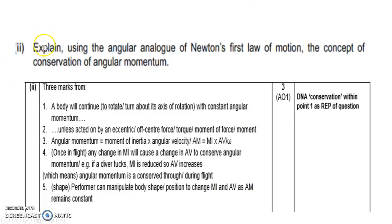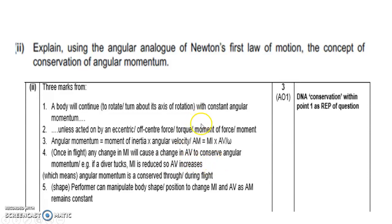This is an exam question that came up and it's quite useful to see it: explain using the angular analogue of Newton's first law of motion the concept of the conservation of angular momentum. You've got two marks for defining the angular analogue, another mark for saying what angular momentum is as the product of moment of inertia and angular velocity, and then a nice easy point to say that a change in moment of inertia will cause a change in angular velocity to conserve momentum. That to me is really important and I'd really want to make sure you see this and make notes on it.